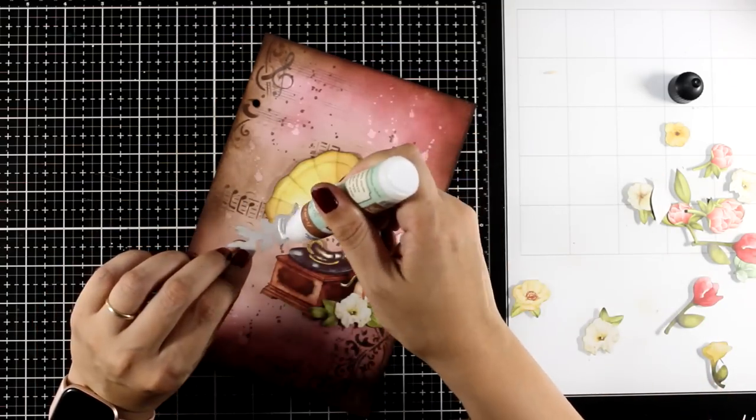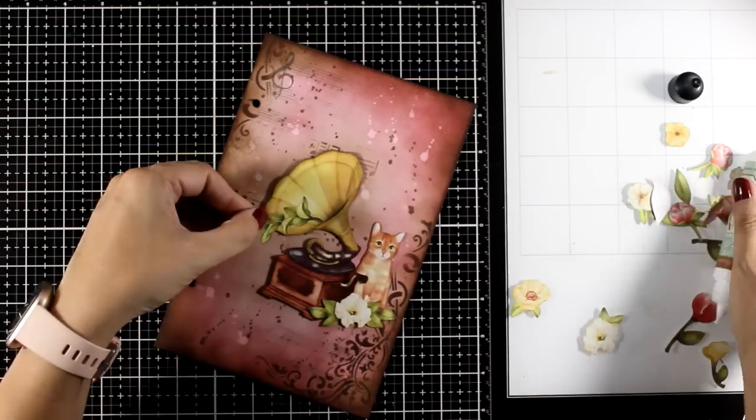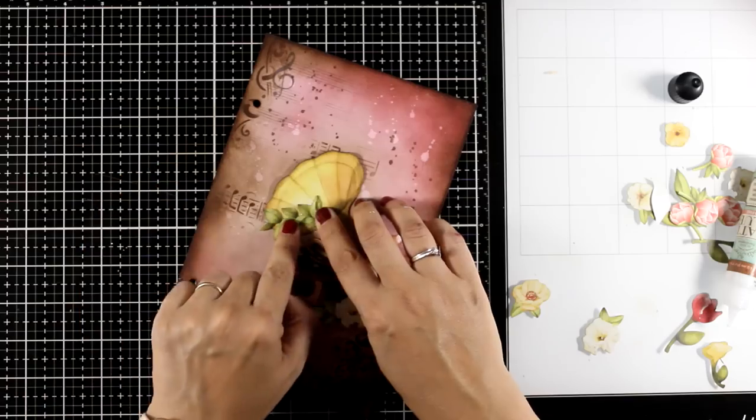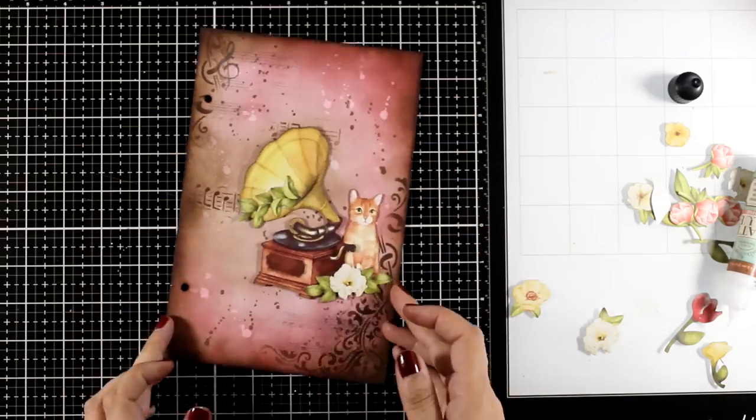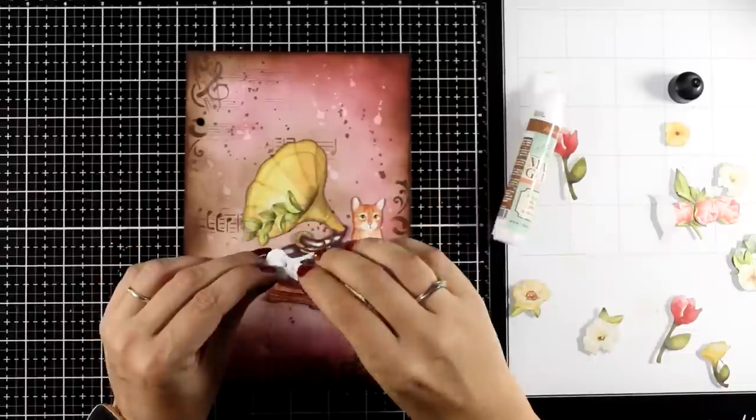So this is step five where you play with ephemera, with cutouts, your scrapbook papers to create a cluster and put together your focal point.